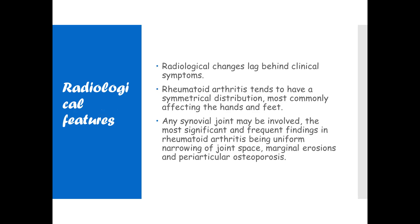Rheumatoid arthritis tends to have a symmetrical distribution, most commonly affecting the hands and feet. Remember, osteoarthritis is mostly asymmetrical and most commonly affects weight-bearing joints like the knees, hips, and spine, whereas rheumatoid arthritis commonly affects small joints such as the hands and feet. Any synovial joint may be involved. The most significant and frequent findings are uniform narrowing of joint space, marginal erosions, and periarticular osteoporosis.